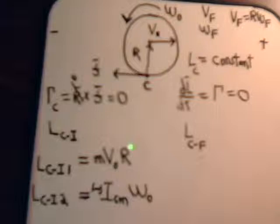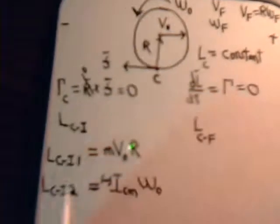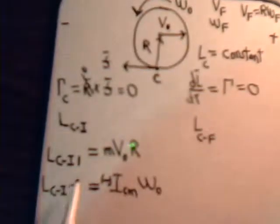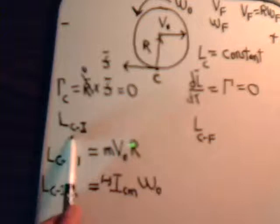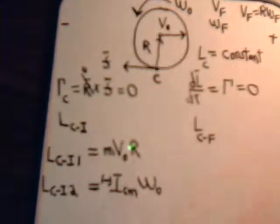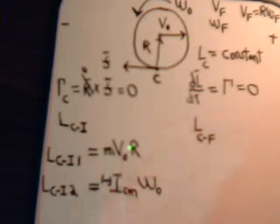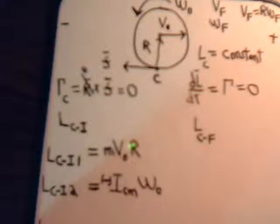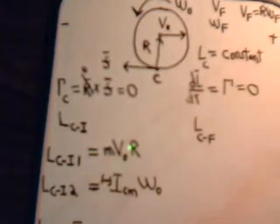So we have the two components of angular momentum about point C when the ball first makes contact with the surface. The total angular momentum is the first component minus the second, so LC-initial equals M·V0·R minus I_CM·omega-naught.